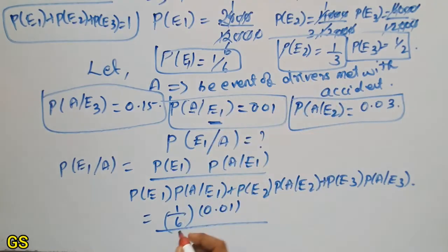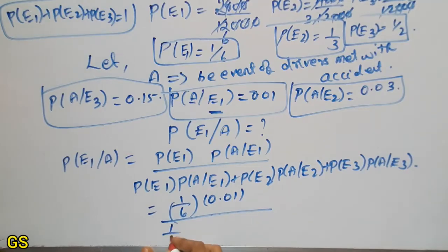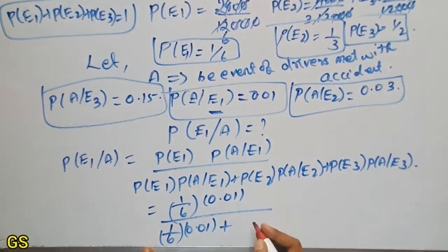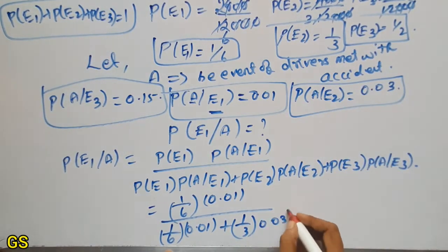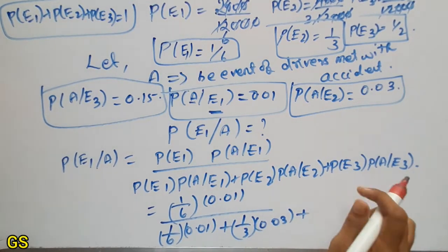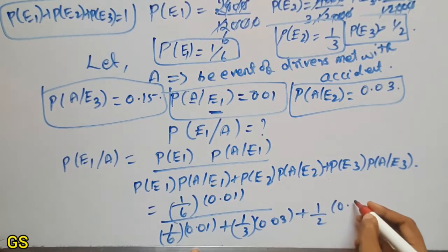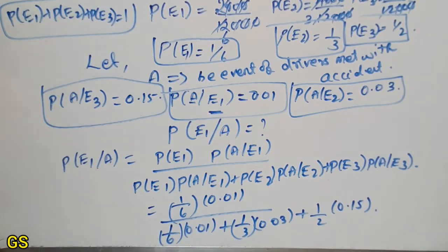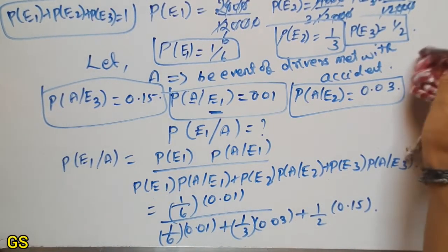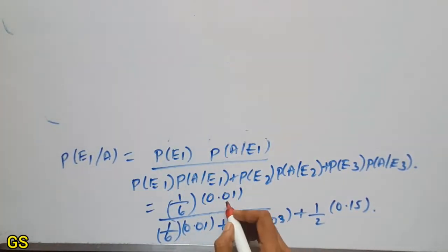P(E2) = 1/3, and P(A|E1) = 0.01, which equals 1/100. P(A|E2) = 0.03. P(E3) = 1/2, and P(A|E3) = 0.15. Now we are going to substitute these values into the formula. This term is 0.01, which is 1/100. So we get: (1/6) × (1/100) in the numerator.